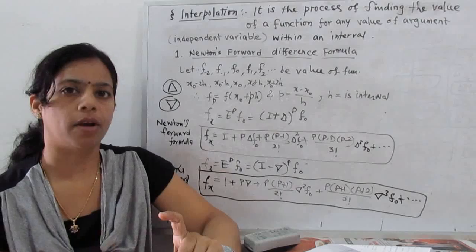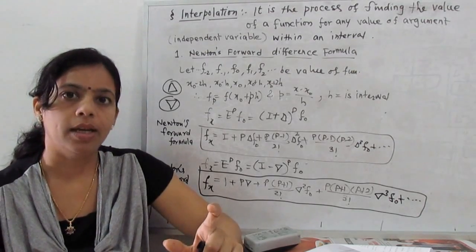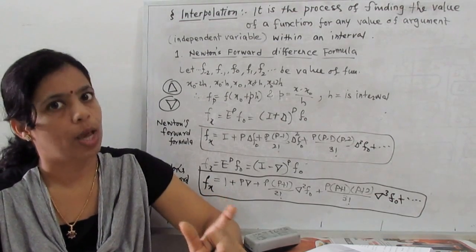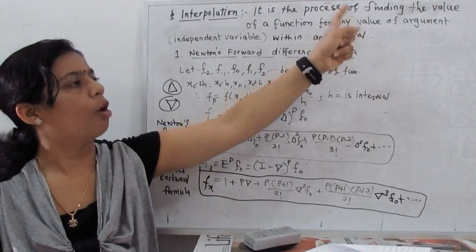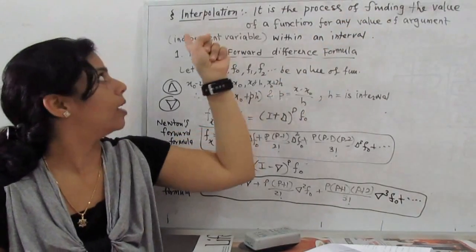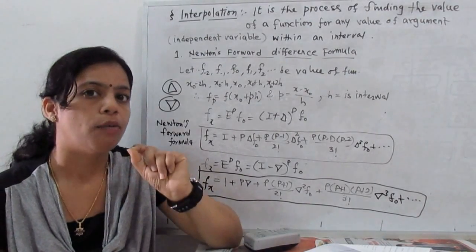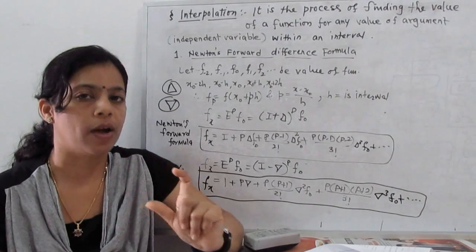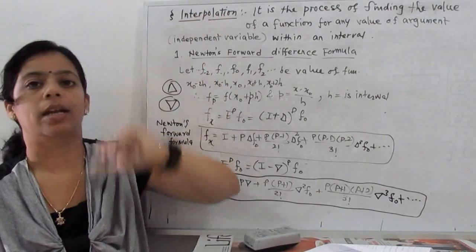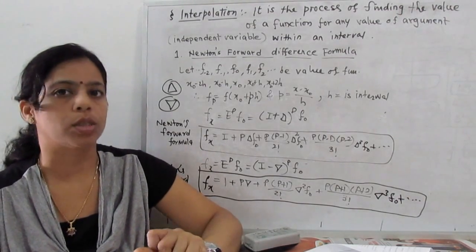Now, what is interpolation? If we have a function y = f(x), where y is the dependent variable and x is the independent variable, interpolation is the process of finding the values of a function for any value of the argument — any value of the independent variable — within an interval. We want to find the value of y, or f(x), at any point x within the interval.